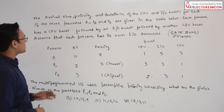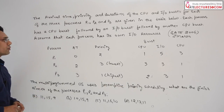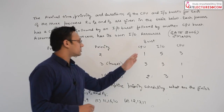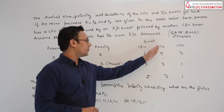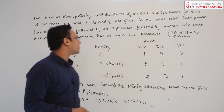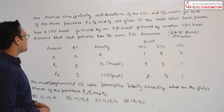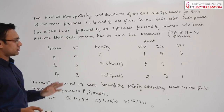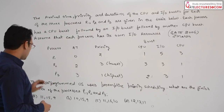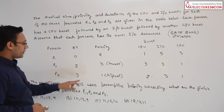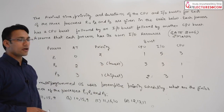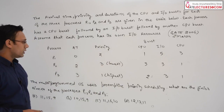Each process has a CPU burst followed by an IO burst followed by another CPU burst. Assume that each process has its own IO resource — every process has its own IO resources. The multiprogramming operating system is using preemptive priority scheduling.